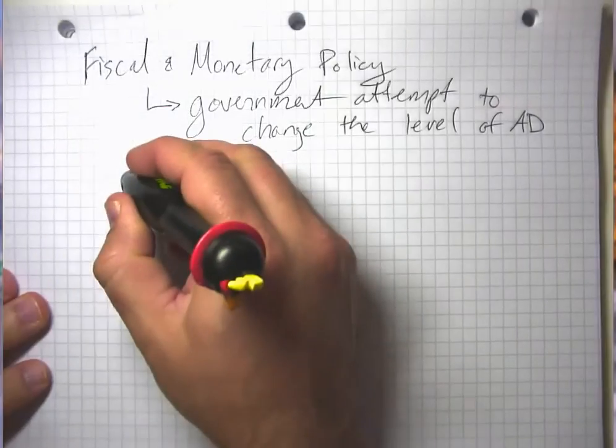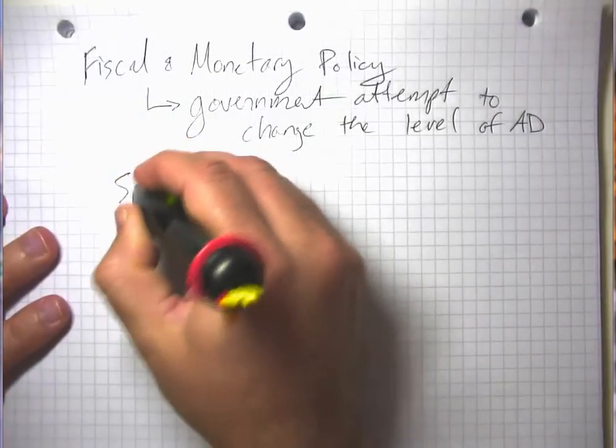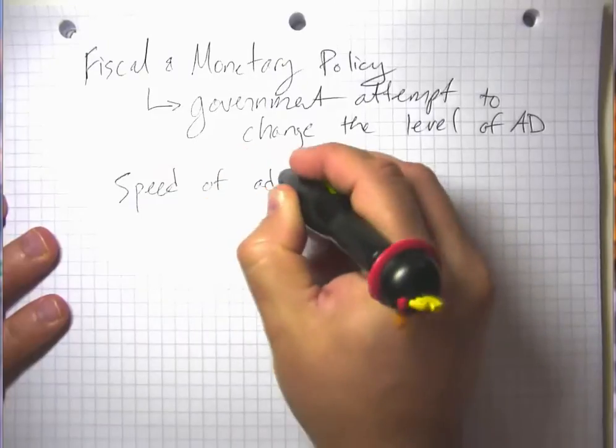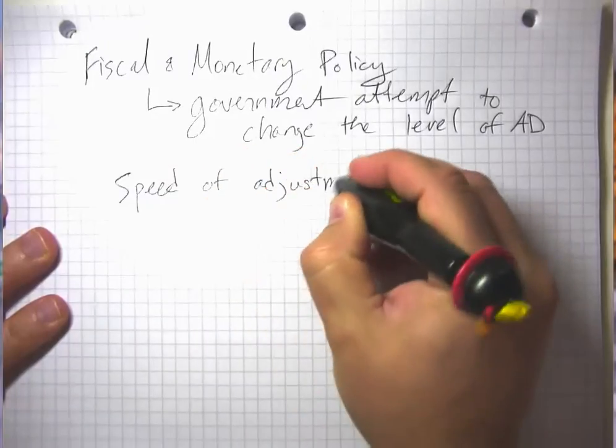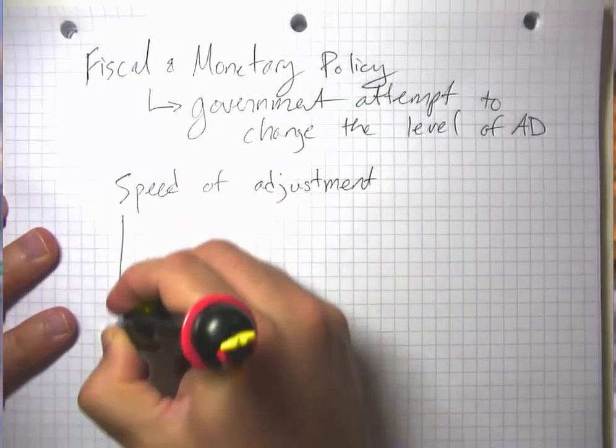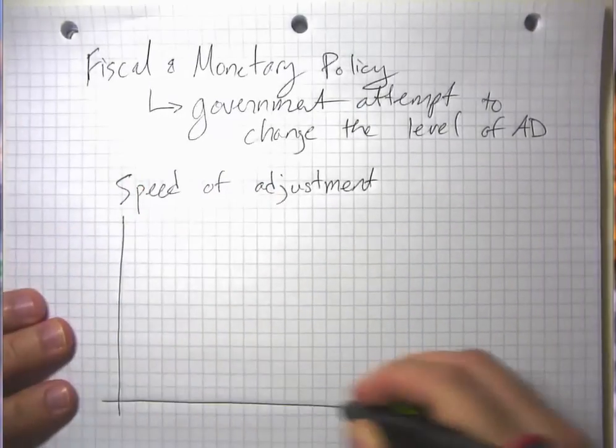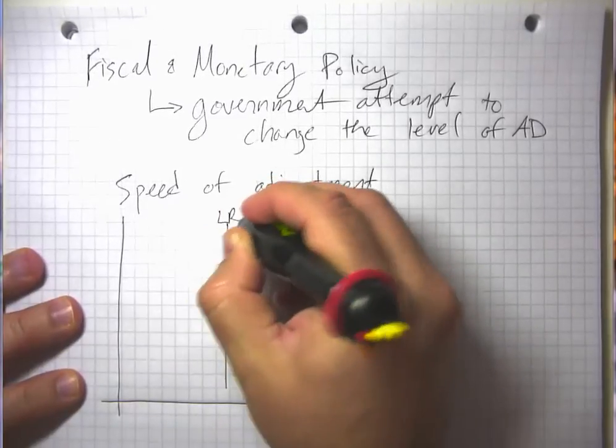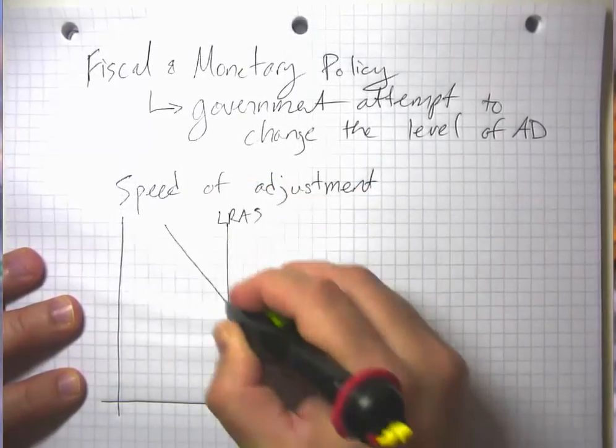One of the things we worry about is that although the economy does eventually adjust to its long run equilibrium in the aggregate demand aggregate supply model, the speed of that adjustment is something that we would worry about.